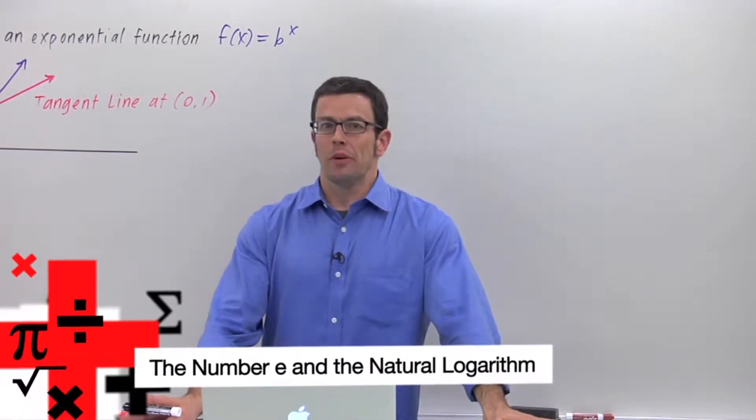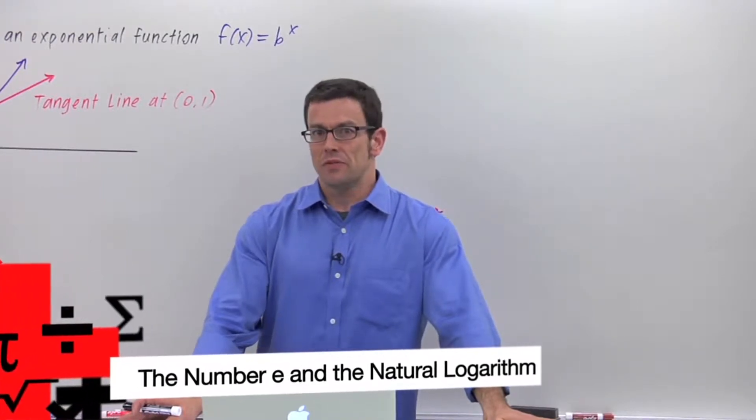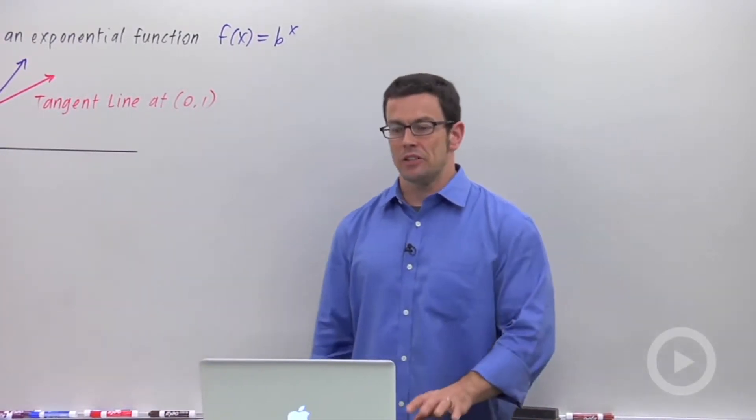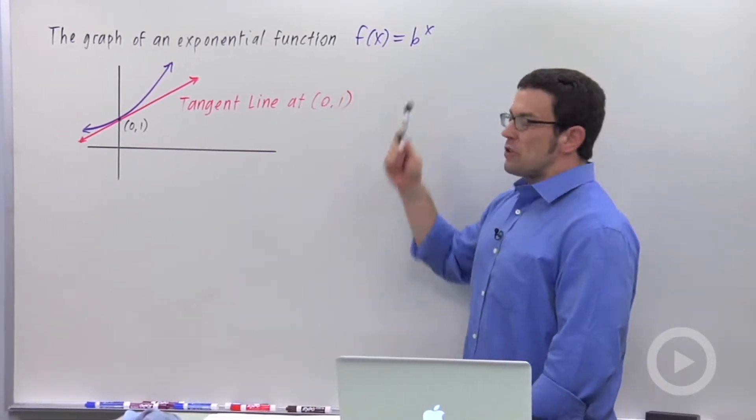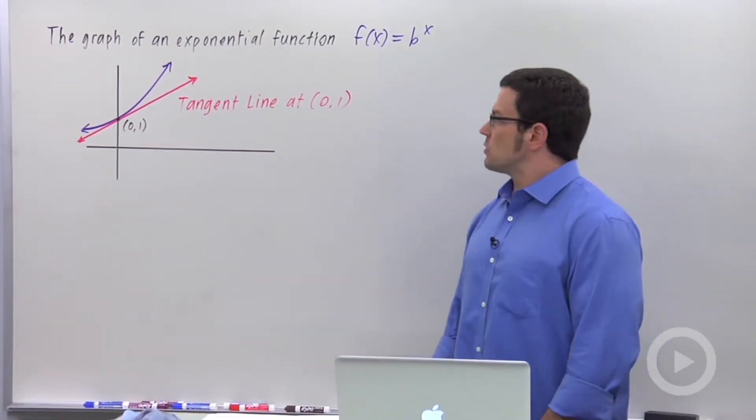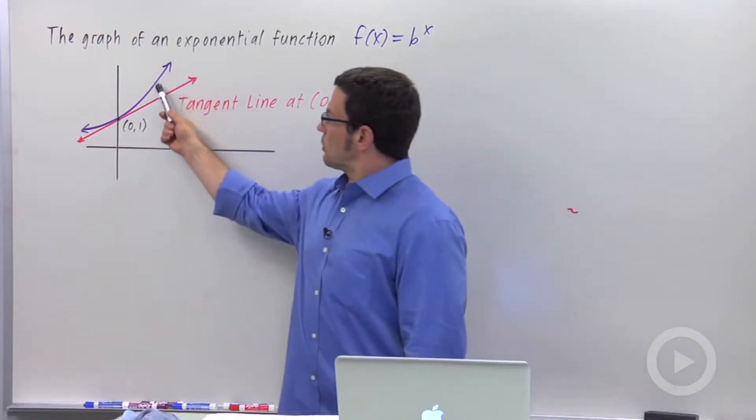I wanted to talk about the number e and why we use it as a base for exponential functions. Why is it so special? So I've drawn a picture here, the graph of an arbitrary exponential function, f of x equals b to the x, that's this graph in purple.